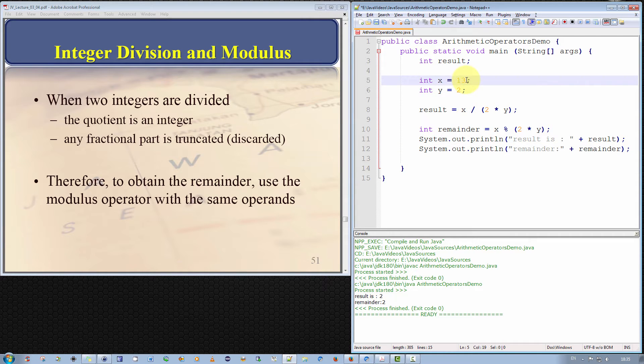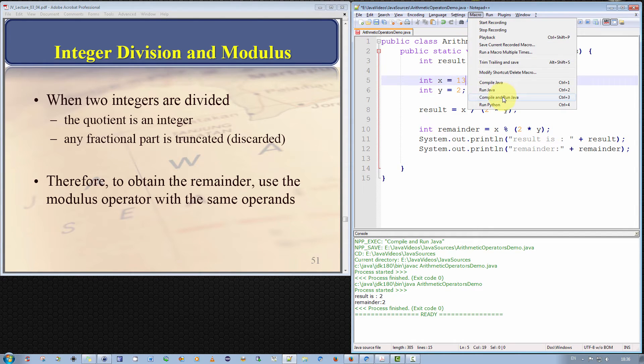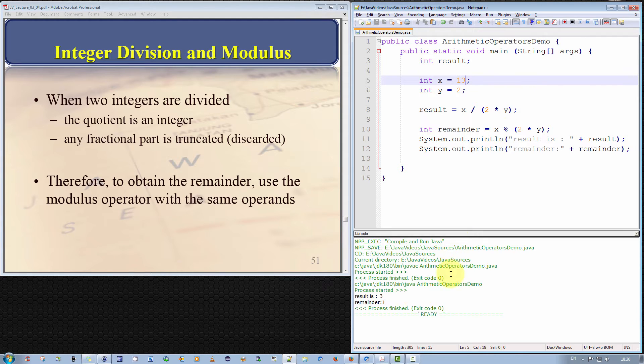Let's try x is equal to 13. So what should we get? Well 13 divided by 4. Well 4 goes into 13 3 times and does 1 over. So result should be 3 and remainder should be 1. 1 over. Let's see what happens. Is result 3 and remainder 1? The result is 3 and the remainder 1. There we go.